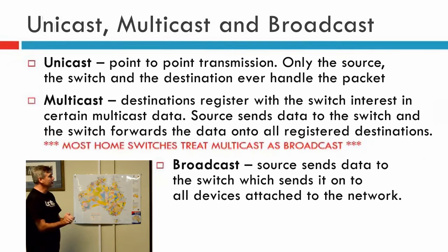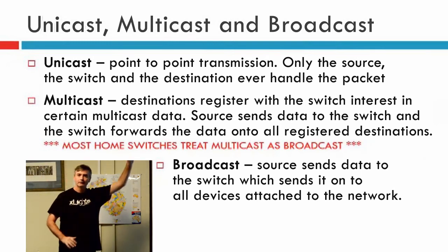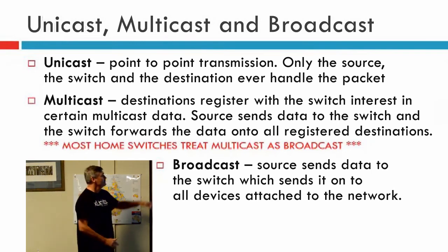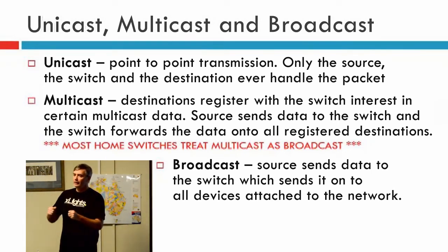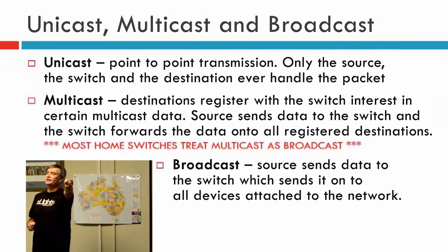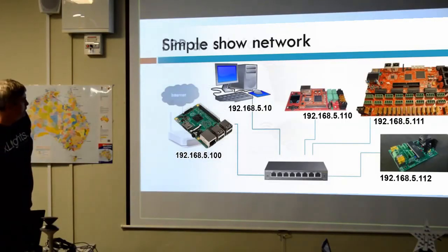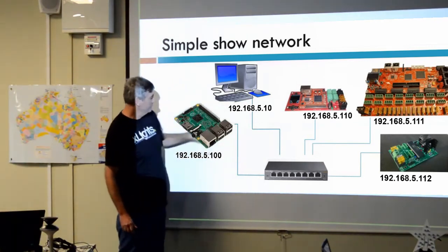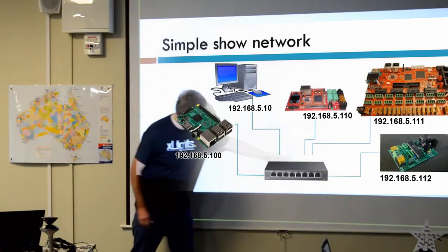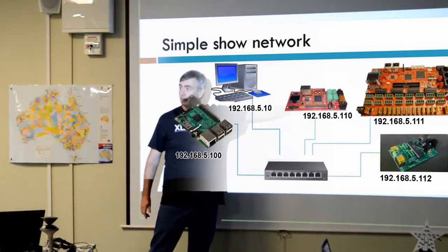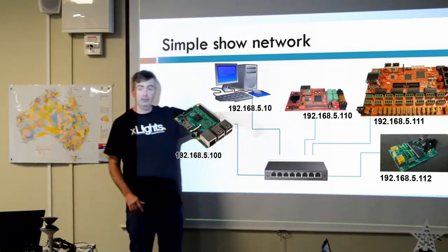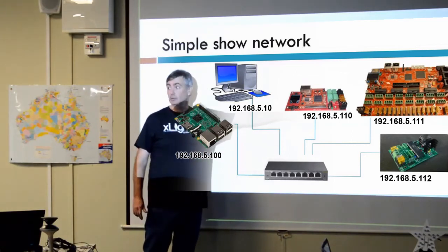Unicast, multicast, and broadcast. Unicast is point to point — when you send data to a particular IP address, it goes through the switch and the switch sends the data only to that specific device. None of the other devices on the network see that packet at all, no matter what — the switch has only sent it to one place.